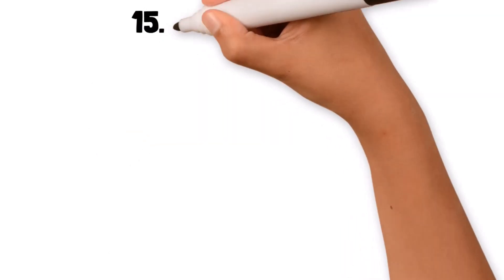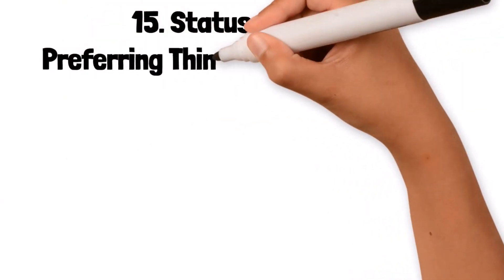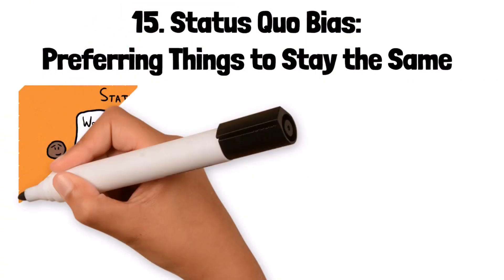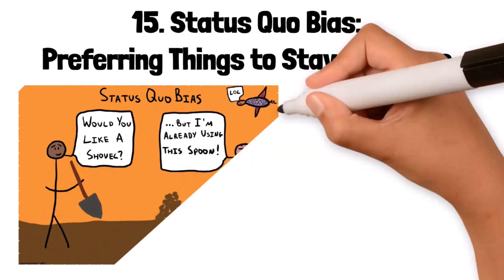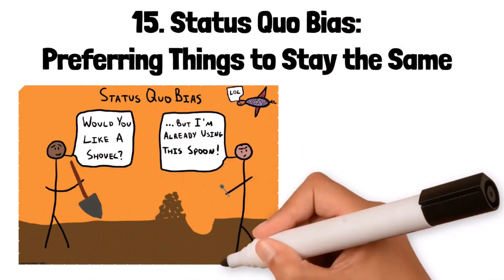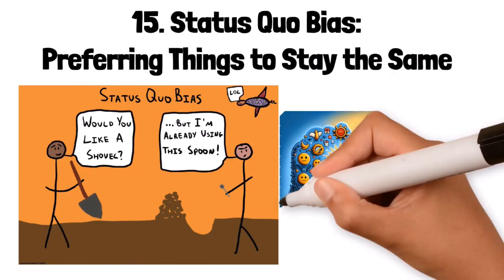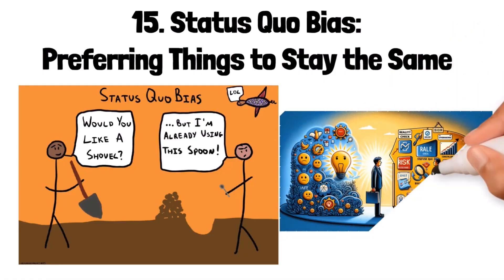15. Status Quo Bias: preferring things to stay the same. Status quo bias is the preference for the current state of affairs. People tend to resist change and prefer things to stay the same, even when there are better alternatives available. For instance, employees might resist a new work process because they are comfortable with the old one, even if the new process is more efficient.